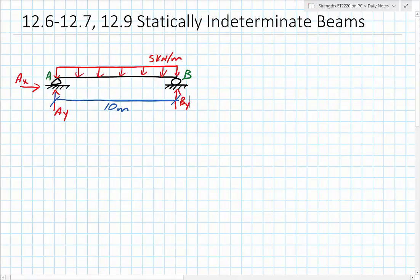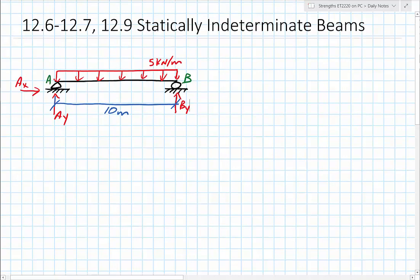So if I look at this beam right here, I have a pin connection on one side, a roller on the other. If I were to draw my reactions, I could have a single reaction up at B, I could have two at A, so I have three unknowns total, and I have three equations. So this one is statically determinate. This is not what we're talking about. This is what we've been doing up until now.